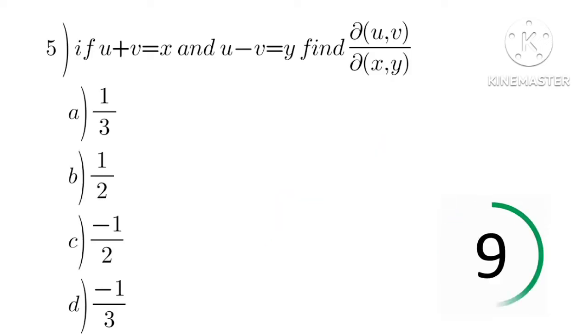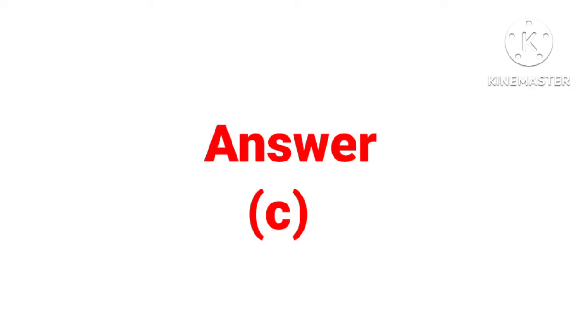If u plus v equal to x and u minus v equal to y, find the partial derivative of u comma v divided by partial derivative of x comma y. Option a: 1 divided by 3, b: 1 divided by 2, c: minus 1 divided by 2, d: minus 1 divided by 3. Answer is option c.